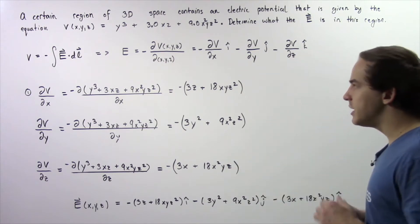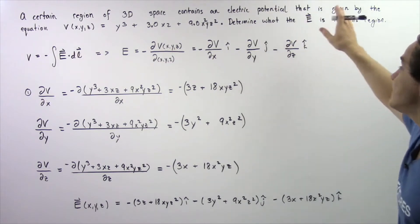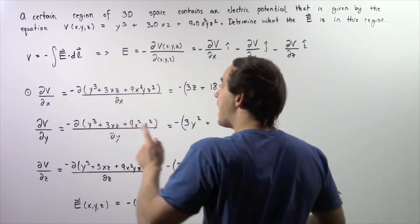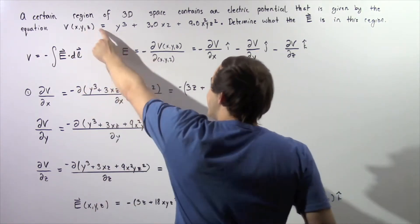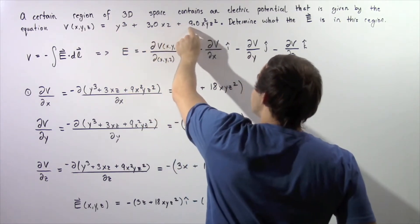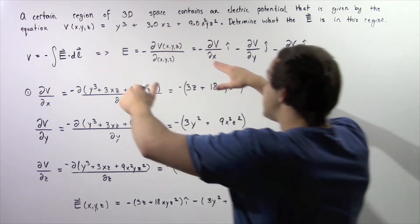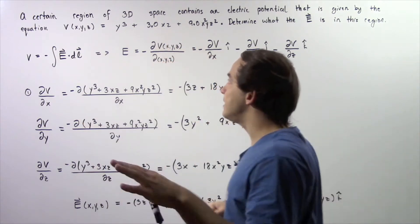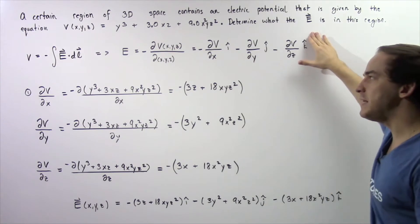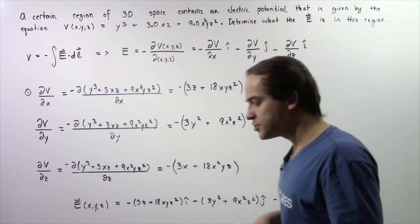A certain region of three-dimensional space contains an electric potential, a voltage, that is given by the following equation. So the voltage, which depends on the x, y, and z coordinate, is equal to y cubed plus 3 times x times z plus 9 times x squared times y times z squared. Using this equation and the result from the previous lecture, we want to determine what the electric field vector equation is in this particular region of three-dimensional space.